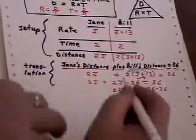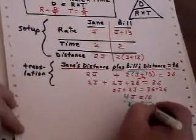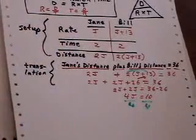2J plus 2J is 36 minus 26. 4J is equal to 10. Divide both sides by 4. And out pops your answer for J.